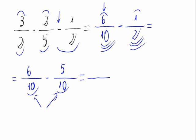The numerator is 6 minus 5, and this equals 1. So we get 1 over 10. This would be the result of the operation we were asked to solve.